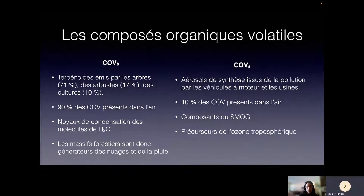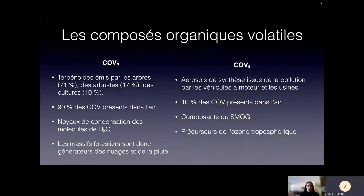Ce qui est intéressant de comprendre, c'est les composés organiques volatils présents dans l'air — ce sont des aérosols. Dans la nature, il y en a beaucoup, dont certains produits par les arbres, et d'autres par la pollution. Les aérosols produits par la pollution génèrent le smog dans les villes, mais ils ne représentent que très peu des aérosols présents dans l'atmosphère. Ce sont plutôt les arbres qui en génèrent près de 200 000 composés différents — des terpénoïdes généralement émis par les arbres. Ça représente vraiment une grande proportion : 60 % au-dessus des forêts contre 10 % pour d'autres sources.